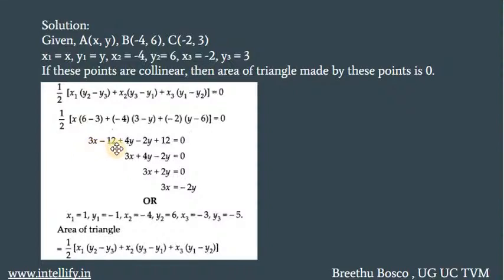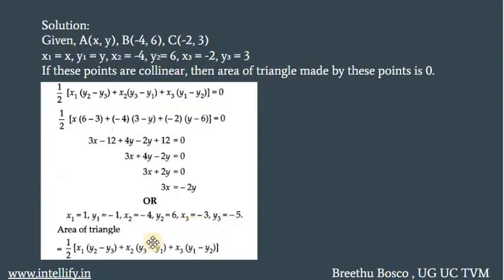Simplifying, you will get 3X − 12 + 4Y − Y + 12 = 0, that is 3X + 4Y − 2Y = 0. You can cancel out −12 and +12. Now 4Y − 2Y gives 2Y, so 3X + 2Y = 0, which gives 3X = −2Y. That is the relation between X and Y. The concept used here is that the area of the triangle formed by the collinear points A, B and C equals 0.